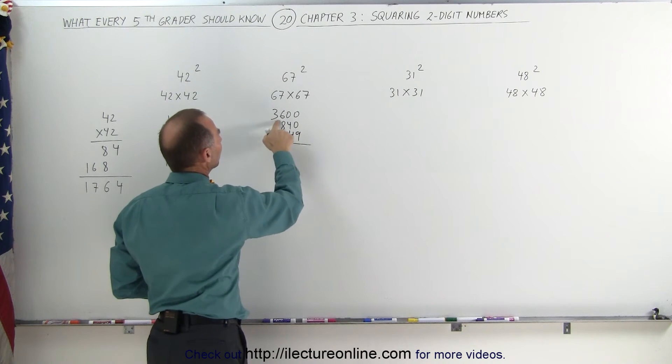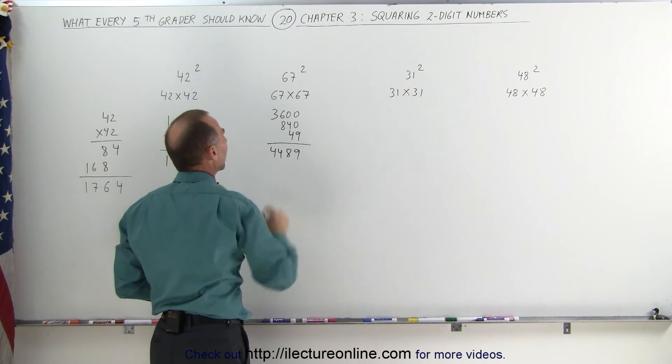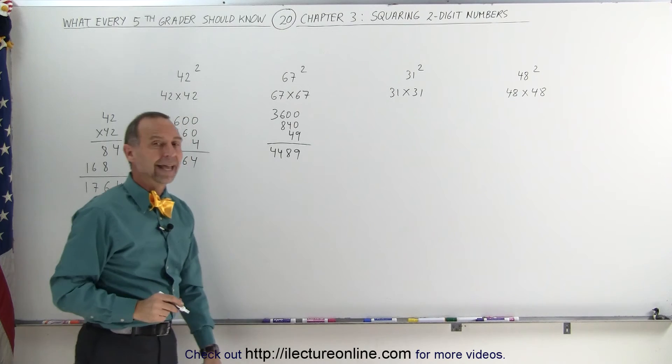So now you see that 36 plus 8 is 44, and 4 plus 4 is 8, and a 9 gives you 4,489.